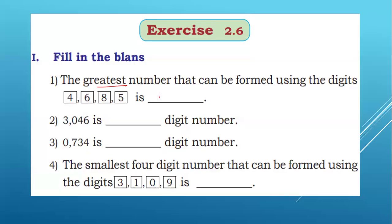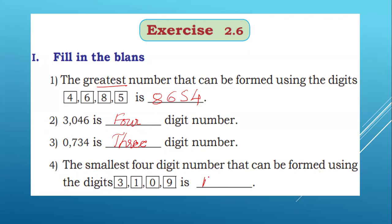The greatest 4-digit number using digits 4, 6, 8, 5 is 8654. The smallest 4-digit number that can be formed using the digits 3, 1, 0, 9 is 1039.